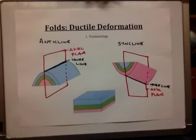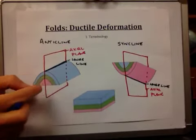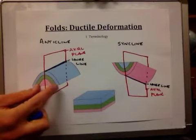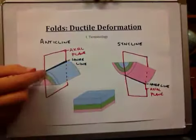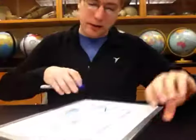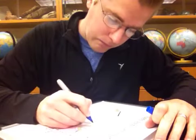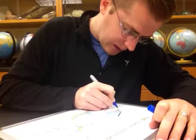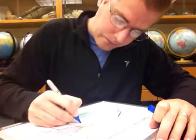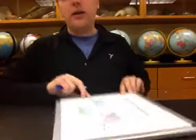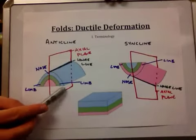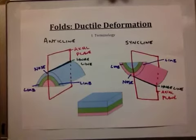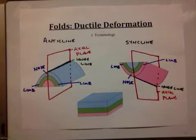We then have the parts of the fold that we need to identify. Each set of the sides of the fold, kind of what look like legs, are known as limbs, in both the anticline and the syncline. The area of maximum curvature is known as the nose. The limbs are the legs on the side, and the nose is the maximum curvature in each of the folds. These are some of the terms you will need to be aware of when looking at folds in an intro geology lab.